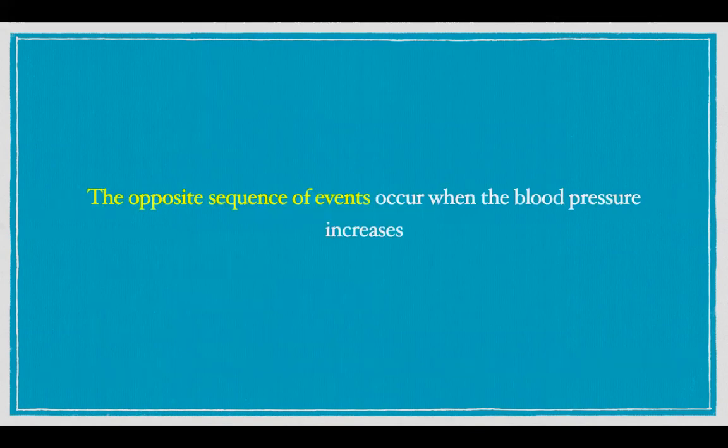In the opposite situation, if the blood pressure increases, the reverse sequence of events occurs. Impulses are sent to the nucleus tractus solitarius, which inhibits the rostral ventrolateral medulla, which inhibits the sympathetic output and then restores the blood pressure back towards normal.